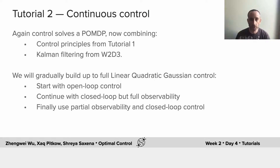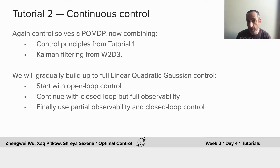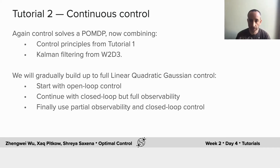This will allow you to combine the control principles that we learned in tutorial 1 with the common filtering that we did yesterday. Gradually over the course of the tutorial we will build up to full linear quadratic Gaussian control. We'll build it up in parts, starting with open loop control where you don't make measurements, then we'll include closed loop control with full measurements, and finally we'll allow those measurements to be unreliable and partial — that's where we will use the Kalman filter with the closed loop control.